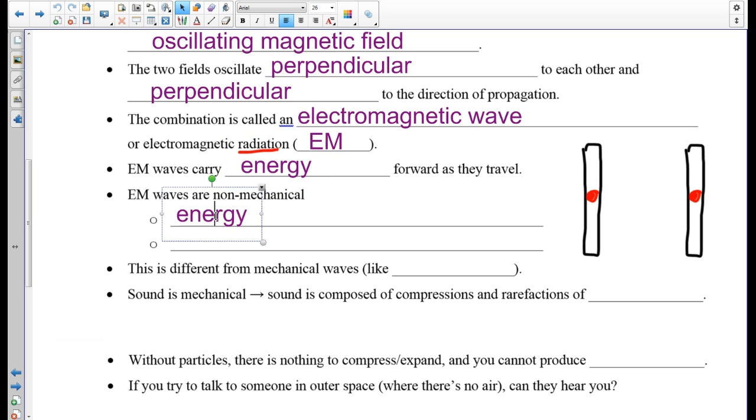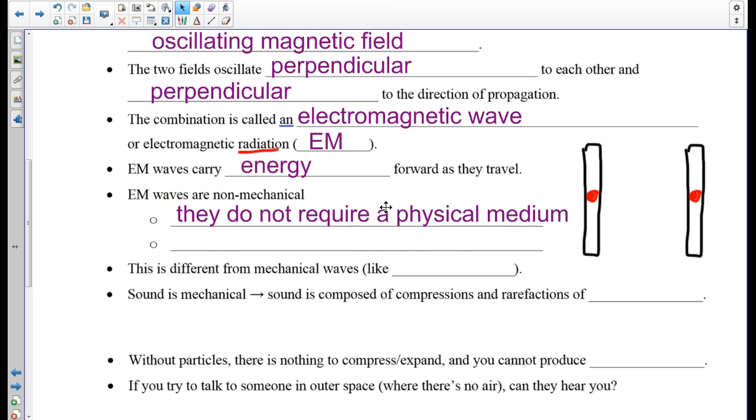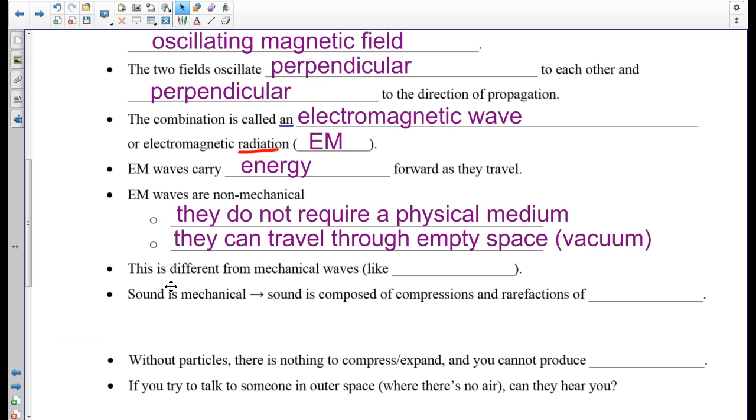The waves are non-mechanical, which is very different from what we've seen before. This means they do not require a physical medium. Or in other words, they can travel through empty space. And this is very different from mechanical waves. An example of a mechanical wave is sound. Sound is mechanical. It's composed of compressions and rarefactions. But you have to have something to compress and expand. Without these particles, there's nothing to compress and expand, and you cannot produce sound.